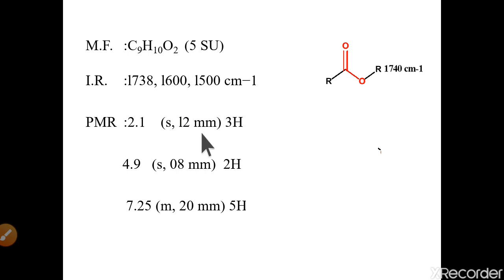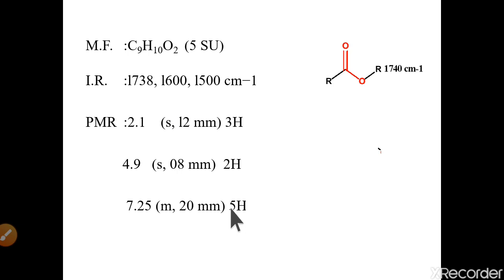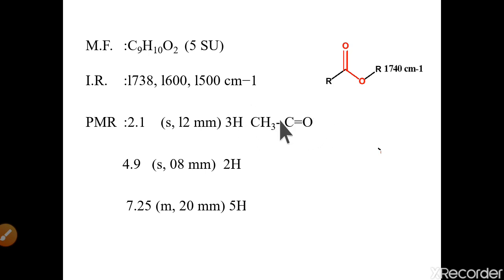In the PMR, the first signal is at 2.1, a singlet of 3H. A singlet at 2.1 means this CH3 is attached to an electron-withdrawing group such as a carbonyl (C=O) or C=C. Since we have an ester, this CH3 is attached to the carbonyl carbon and shifts slightly downfield.